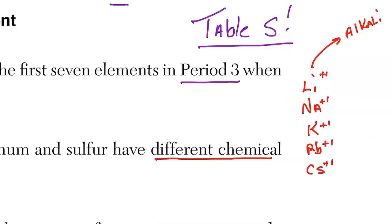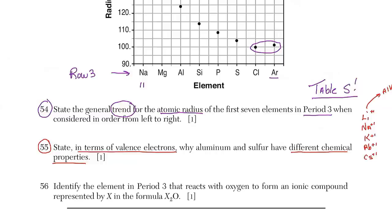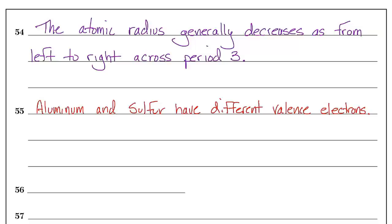Mendeleev organized the periodic table by chemical properties without knowing about electrons. He noticed a repetition, which we now know was due to valence electrons. If you have a different number of valence electrons, you have different properties. Aluminum has 3 valence electrons and sulfur has 6, giving them different outermost electrons. The answer: aluminum and sulfur have different valence electrons.